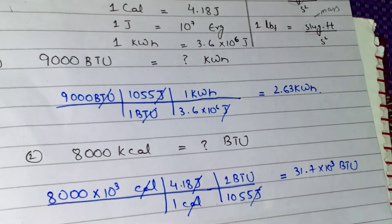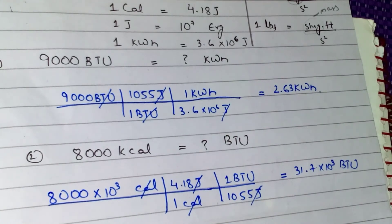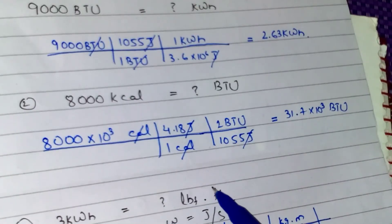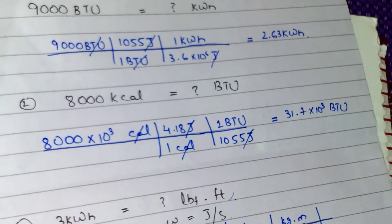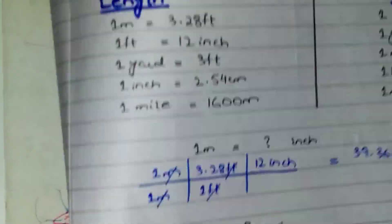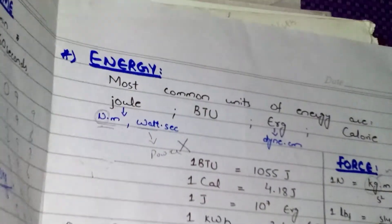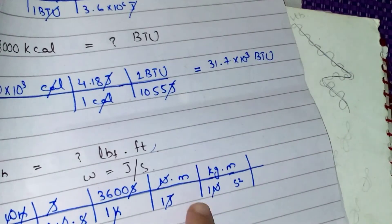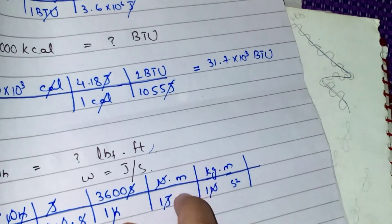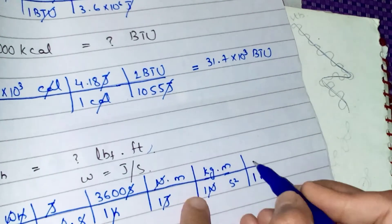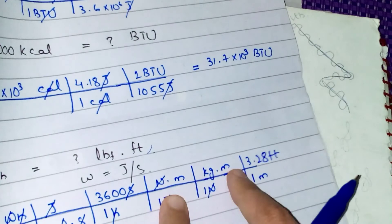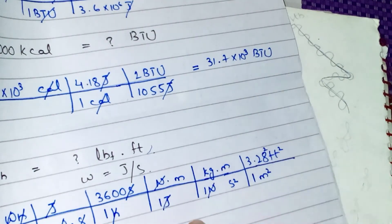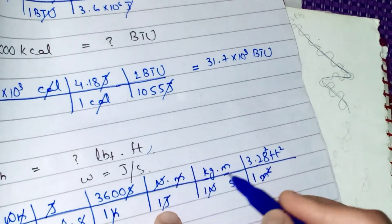To cancel meter, I use 1 meter = 3.28 ft (from length conversions). Since I have meter squared, I square the entire conversion: (1 m)² = (3.28 ft)². This meter squared cancels the meter squared, leaving 3.28² ft² in the numerator along with kg and s² in the denominator.